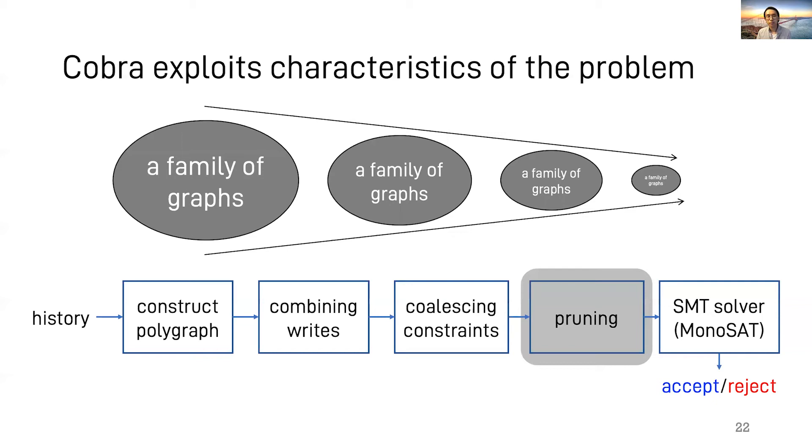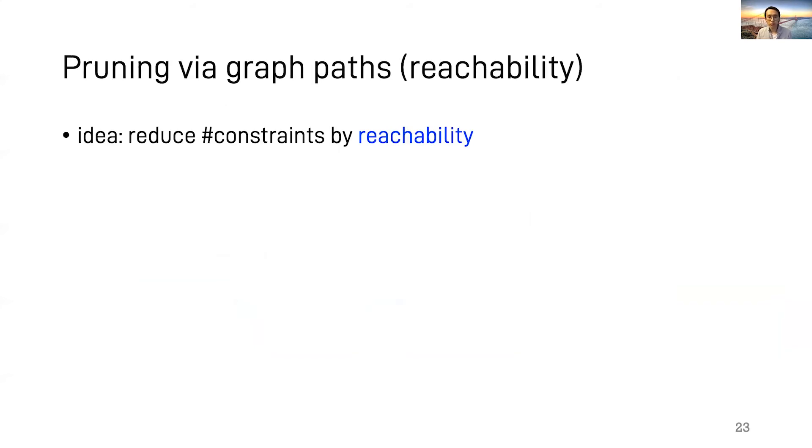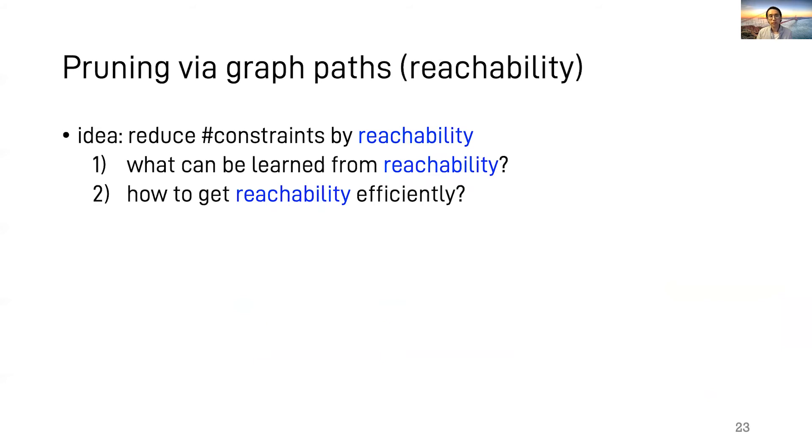Beyond that, Cobra also does its own specialized solving, which we call pruning. The idea of pruning is to resolve constraints by the information encoded in graph reachability. To see why and how, there are two questions. What can we learn from graph reachability? And in practice, how can we get reachability quickly? For the first question, let's revisit our polygraph example. If we know the fact that there is a path from T3 to T2, then we can safely conclude that we have to choose the edge T3 to T1 because otherwise there will be a cycle. Thus, we prune one constraint and narrow the search space of this problem.